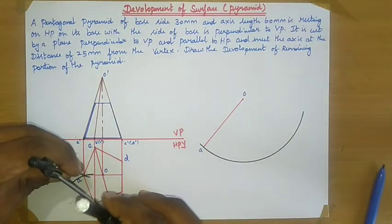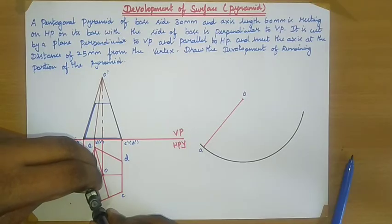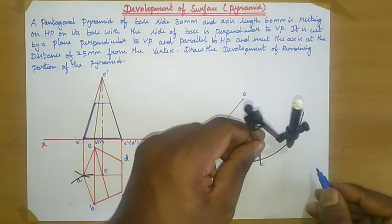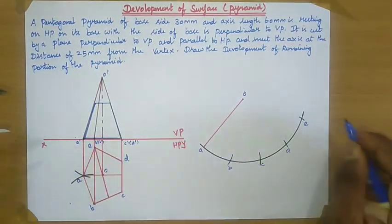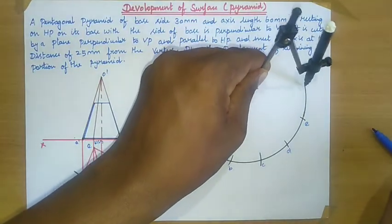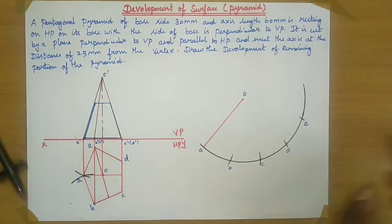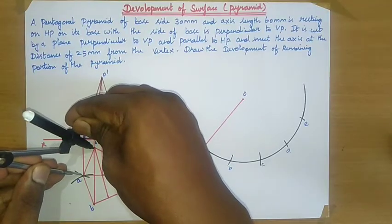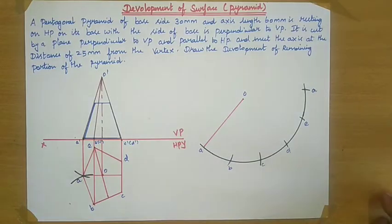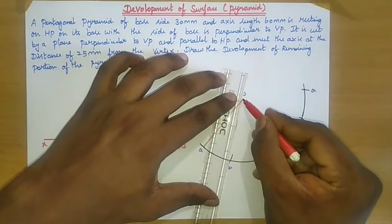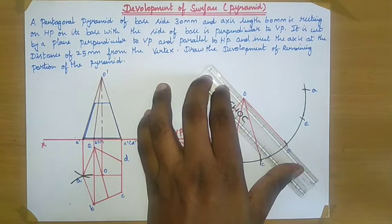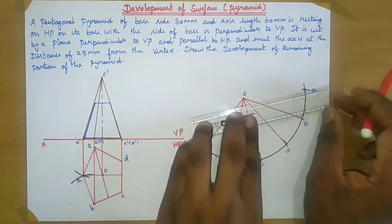Now draw the five sides of the pentagon, each side 30 mm. With A as center, cut an arc; with B as center, cut an arc. Name these points as B, C, D, E. Extend the line and take 30 mm distance with E as center, cut an arc and name this point as A. Now join all lines from O to B, O to C, O to D, O to E, and O to A.